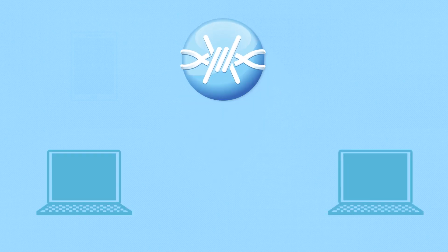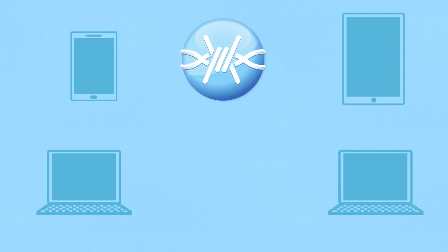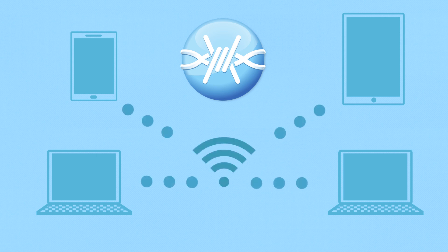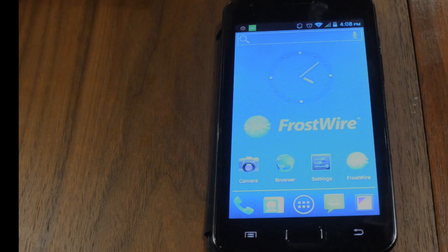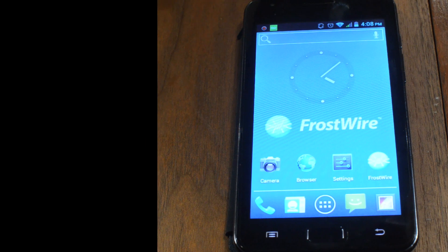Files will be shared with any device running FrostWire — that means PCs, Macs, Kindle Fire HDs, and Android phones or tablets connected to the same Wi-Fi hotspot. Wi-Fi sharing on FrostWire is only meant for your local network. No files will be available to the general public on the internet.